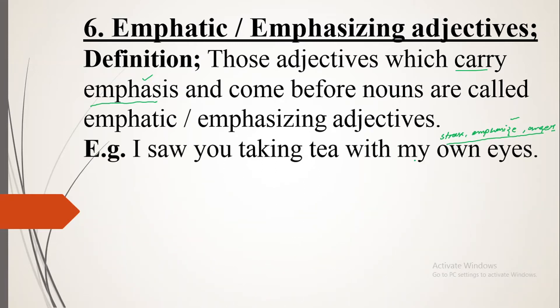The first example is: 'I saw you taking tea with my own eyes.' Here 'own' is your emphatic or emphasizing adjective, adding something to the meaning of 'eyes' and showing anger. If someone disagrees and says 'I was not taking tea,' you respond: 'I saw you taking tea with my own eyes.'